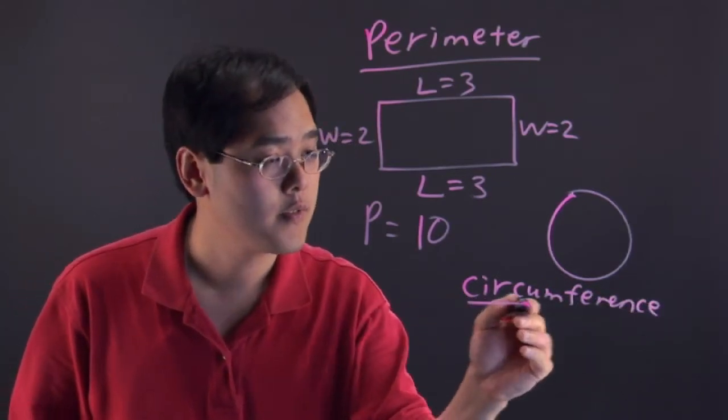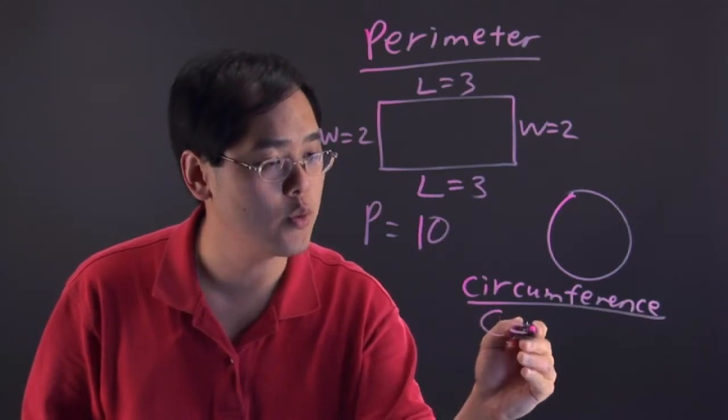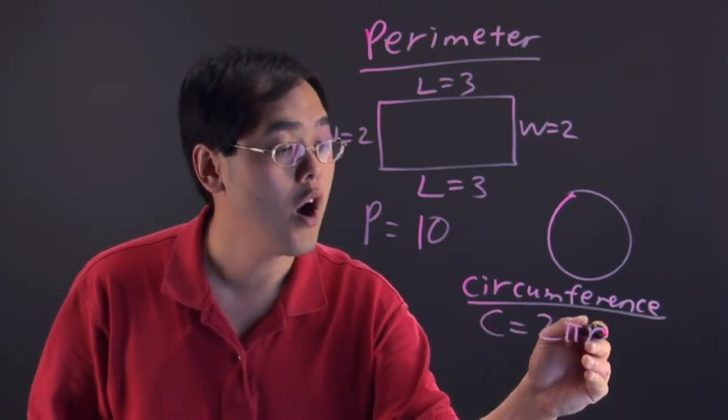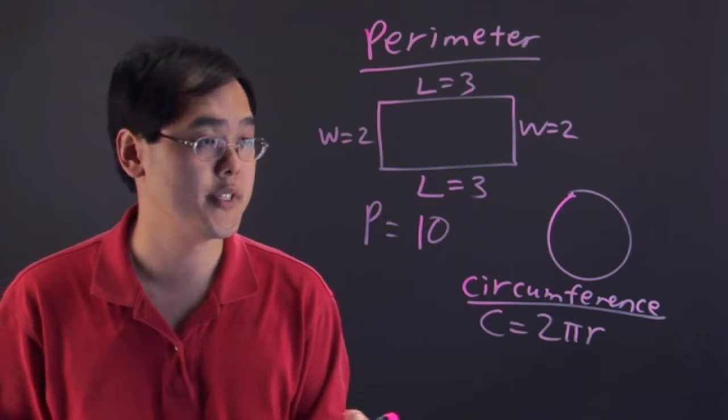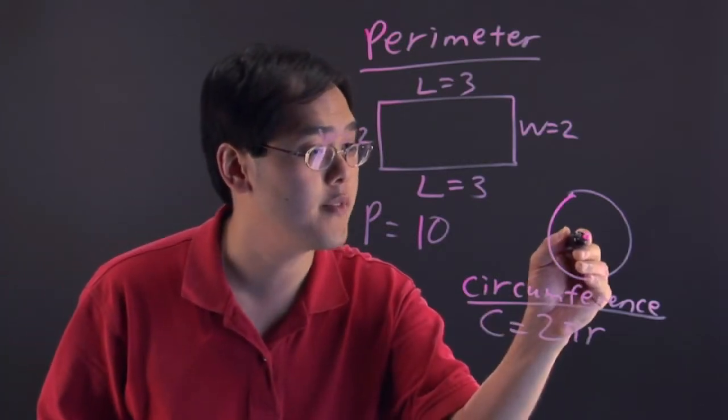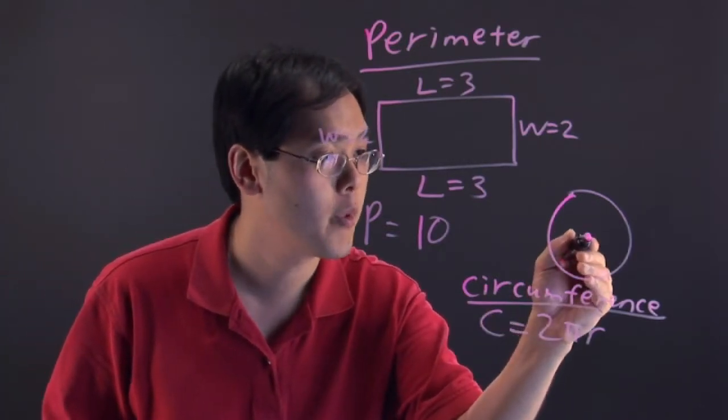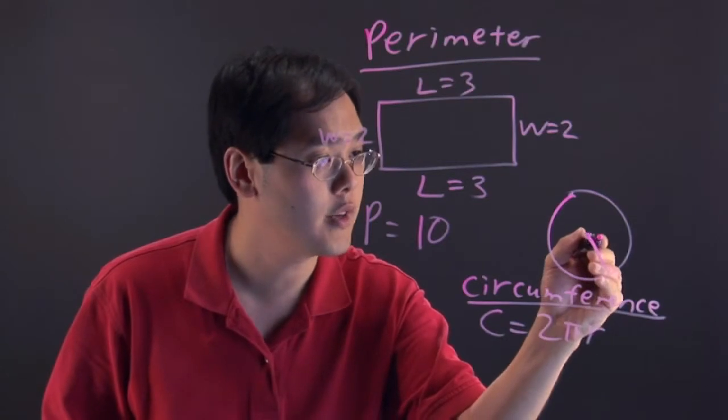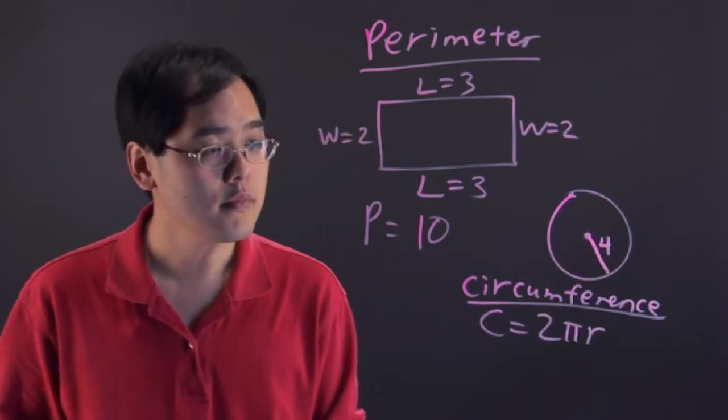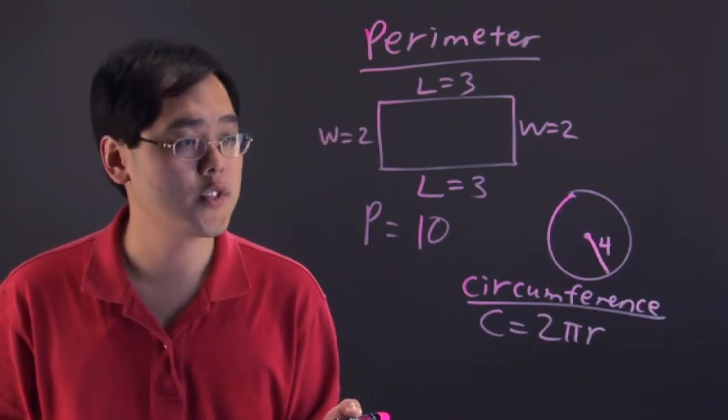Now, circumference formula for a circle is C equals 2 pi r. r is the radius of the circle itself. So, supposing we have a circle with a certain center, let's call it 4.